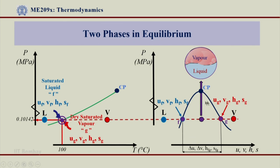The uf will be equal to ug, vf will be equal to vg, hf will be equal to hg, and sf will be equal to sg. So delta u will be equal to 0, delta v will be equal to 0, hfg will be equal to 0, and sfg will be equal to 0 in that case. This is what will happen at critical pressure at 22 MPa and 373 degrees centigrade.